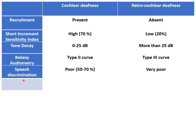Speech discrimination is the ability of a person to understand speech. Overall in sensorineural hearing loss, the speech discrimination score is poor. In cochlear deafness, speech discrimination is 50 to 70%, meaning a person can understand only 50 to 70% of the words presented to them. In retro-cochlear pathology, it is even poorer — very poor compared to cochlear deafness.